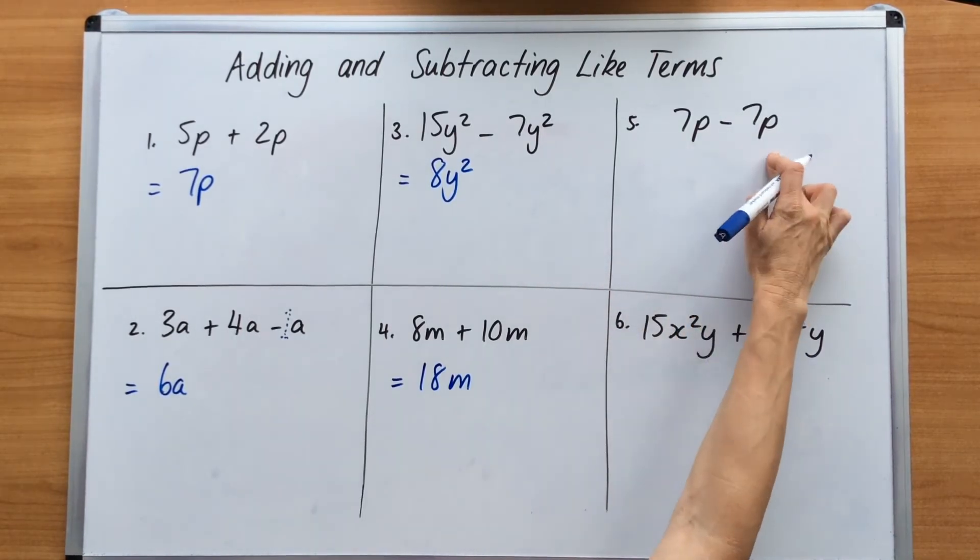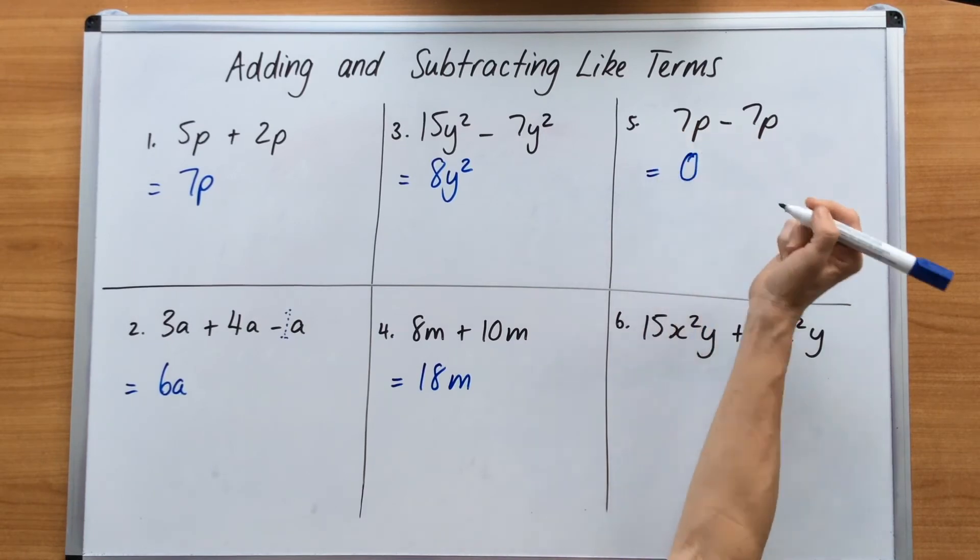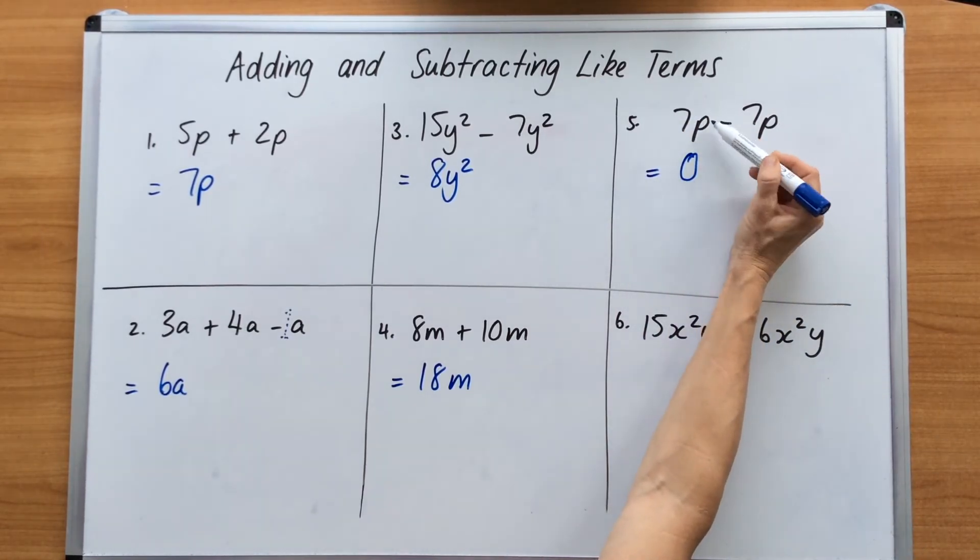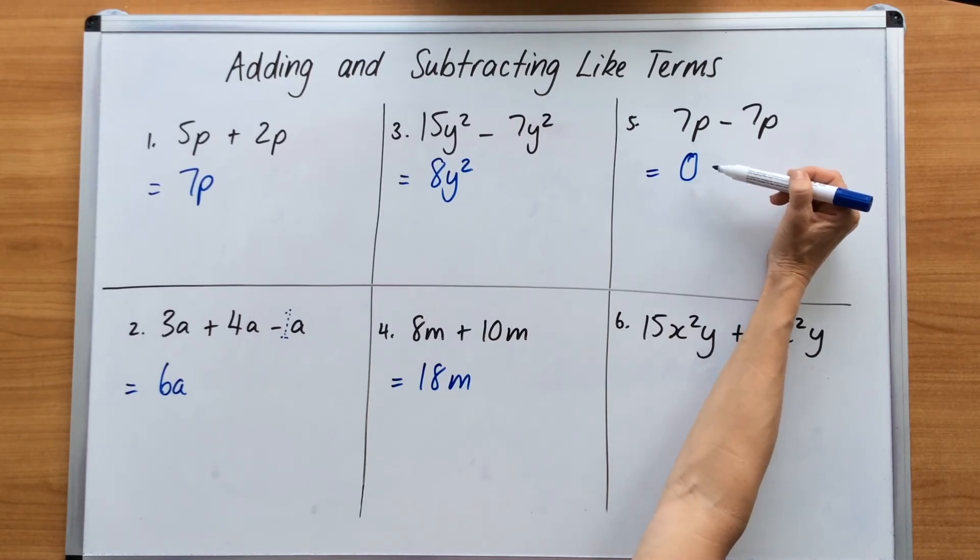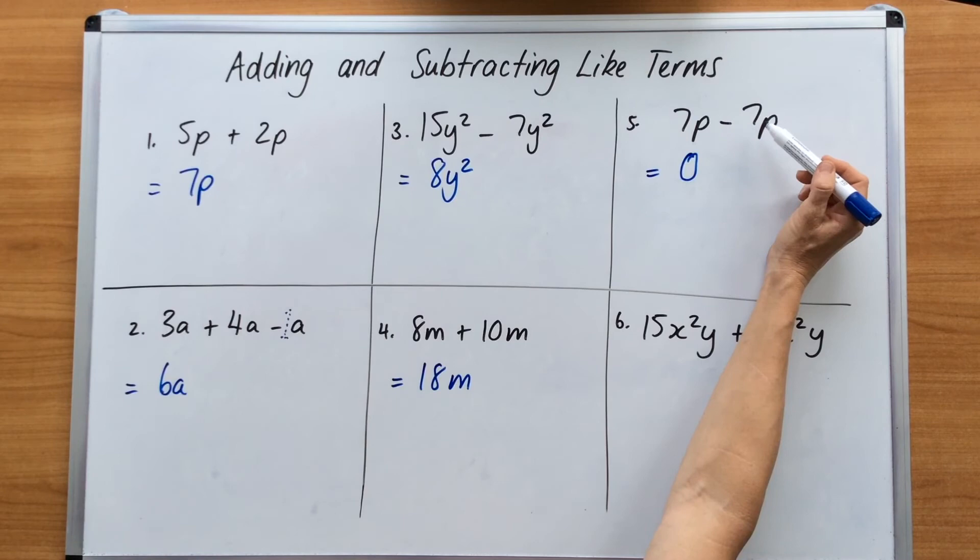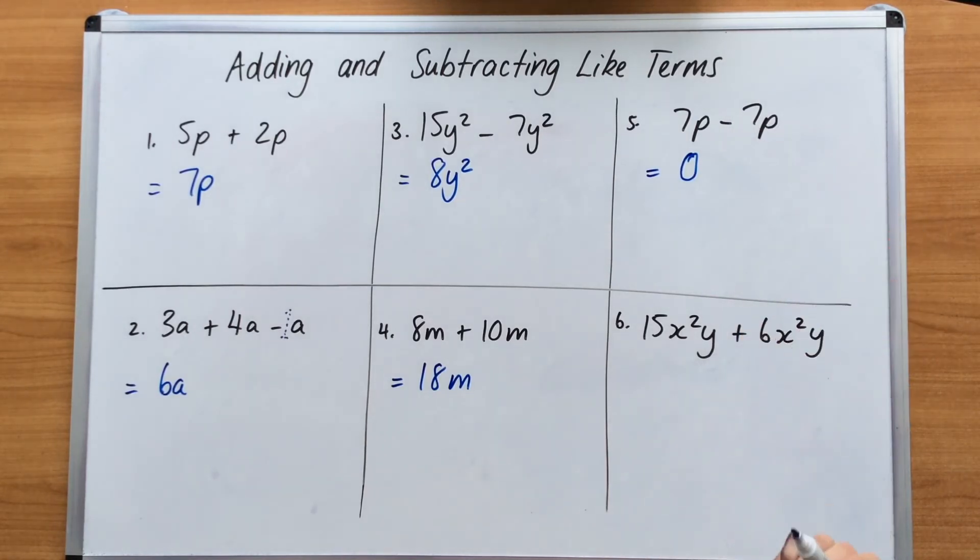Over here in number 5, we have 7P minus 7P. 0 is all you have to write. You don't worry about anything else. It's 7 lots of P, so 7 potatoes, minus 7 potatoes. There's no potatoes left. You don't go 0P, you simply put 0 because there's nothing there to write. And this one here looks more complex, but don't worry about that too much because just like the Y squared, the X squared Y and the X squared Y are like terms and have a relationship, so we're only dealing with the numbers. So we are adding 15 plus 6 is 21, and we simply drop down the X squared Y. These are like terms. They're related. We're just focusing on the numbers.